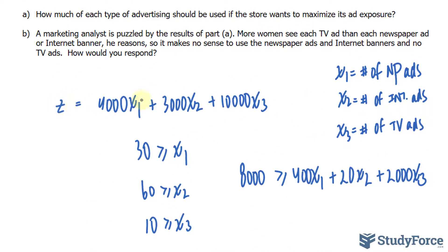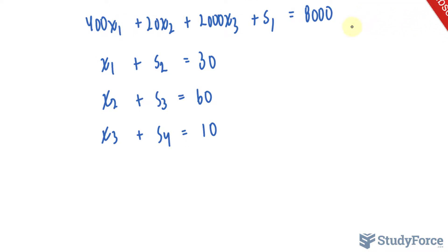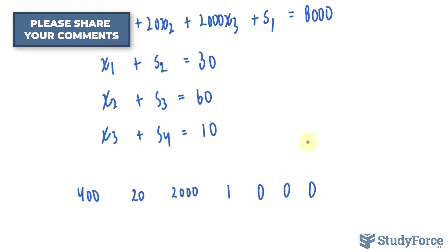Notice I did not introduce a slack variable for the objective function because it's already an equation. Once you have these four equations and the objective function, you need to convert them into an augmented matrix, which will serve as your initial simplex tableau. Starting with the first equation, I'll write down the leading coefficients: 400, 20, 2,000. You want to be as organized as possible because it gets messy with multiple slack variables — this is why I gave this question a difficulty rating of hard, since we have four slack variables.